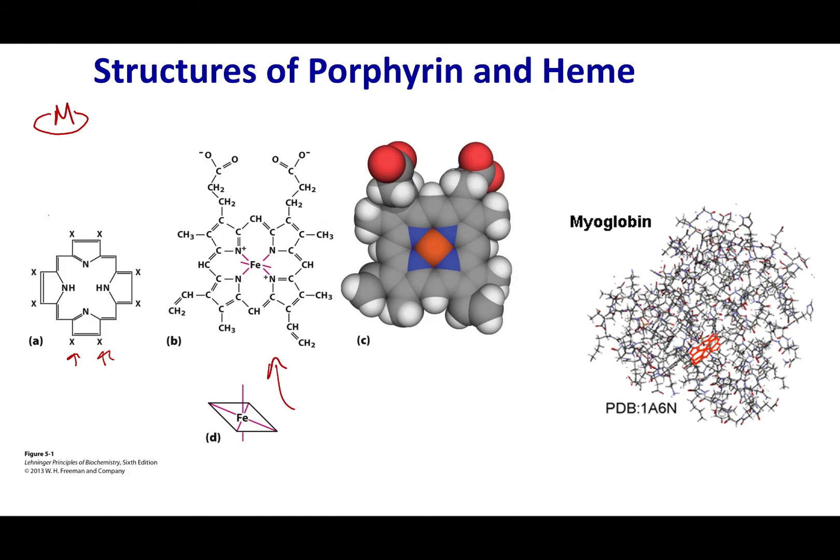Now this might sound familiar to you guys, heme is the stuff that makes your blood red. You'll find this structure in your oxygen transport system. Now my heme structure depicted right here isn't all by its lonesome. It actually sits in a bigger protein called myoglobin.